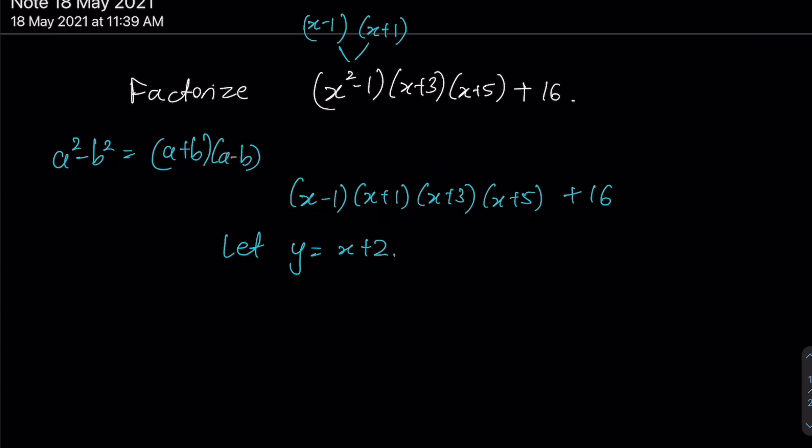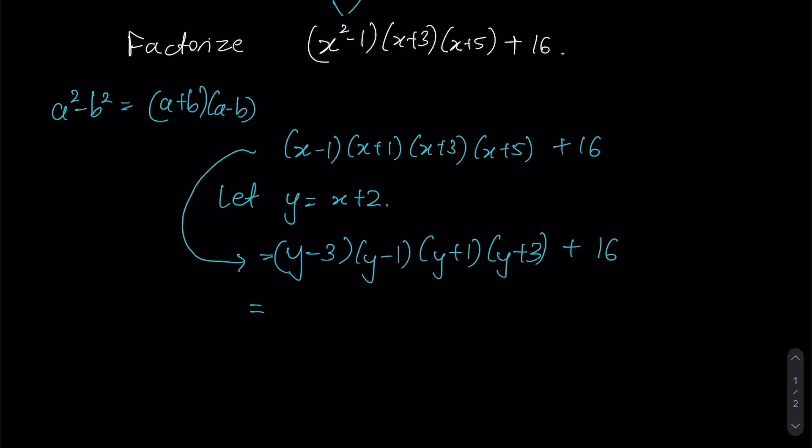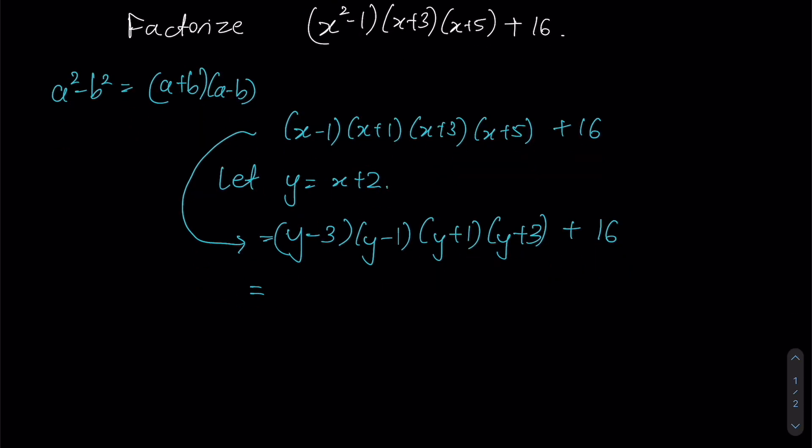This is what it will look like. I will now have (y - 3)(y - 1)(y + 1)(y + 3), and don't forget to include the 16 as well. As of right now, we can see that y - 3 and y + 3 can be applied in our identity.